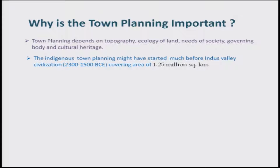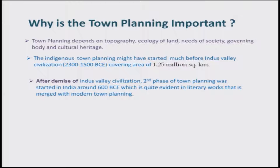Indigenous town planning might have started much before in the Indus Valley Civilization, what we are calling nowadays the Saraswati River Civilization, which was around 2300 to 1500 BC, covering an area of 1.25 million square kilometers. After the demise of Indus Valley Civilization, there was a second phase of town planning in ancient India around 600 BC, quite evident in literary works, and it merges with modern town planning as it is continuing till today.